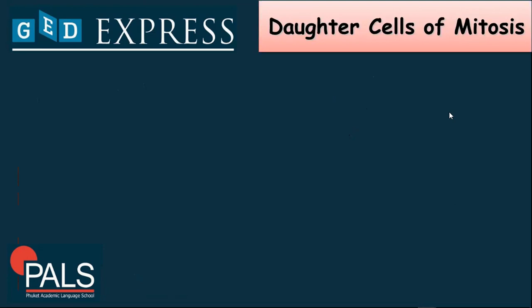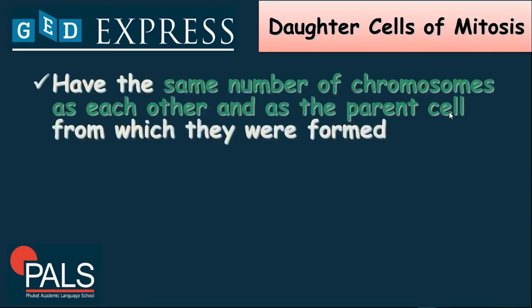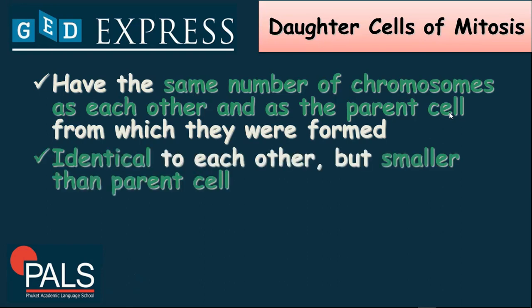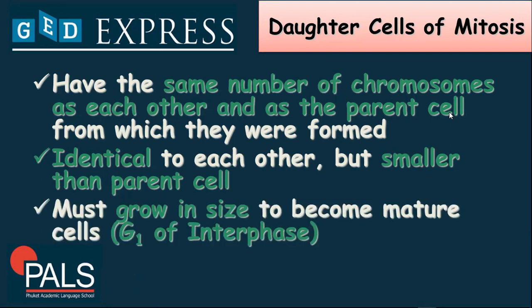We have here the daughter cells of mitosis. You should always know that they have the same number of chromosomes as each other and as the parent cell from which they were formed. They are totally identical to each other, but they are smaller in size compared to the parent cell. They must grow in size to become mature cells during the primary growth under interphase on the cell cycle.